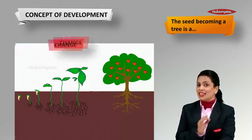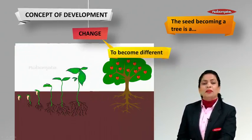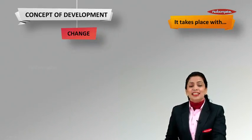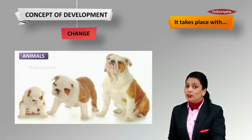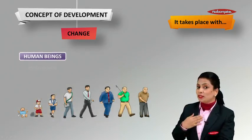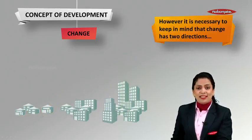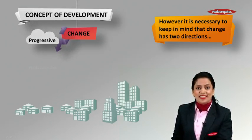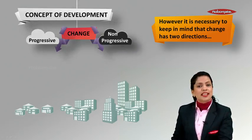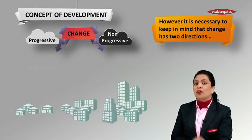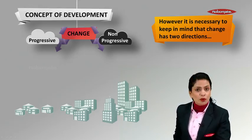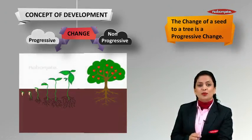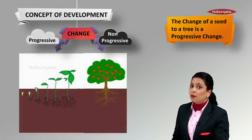The seed becoming a tree is a change. Change means to become different. Change is a natural process — it takes place with plants, animals, human beings, and regions. Whenever change takes place, it has two directions: the first is a progressive change, and the second is a non-progressive change. Progressive change is a positive change, and the change of a seed to a tree is a progressive change.